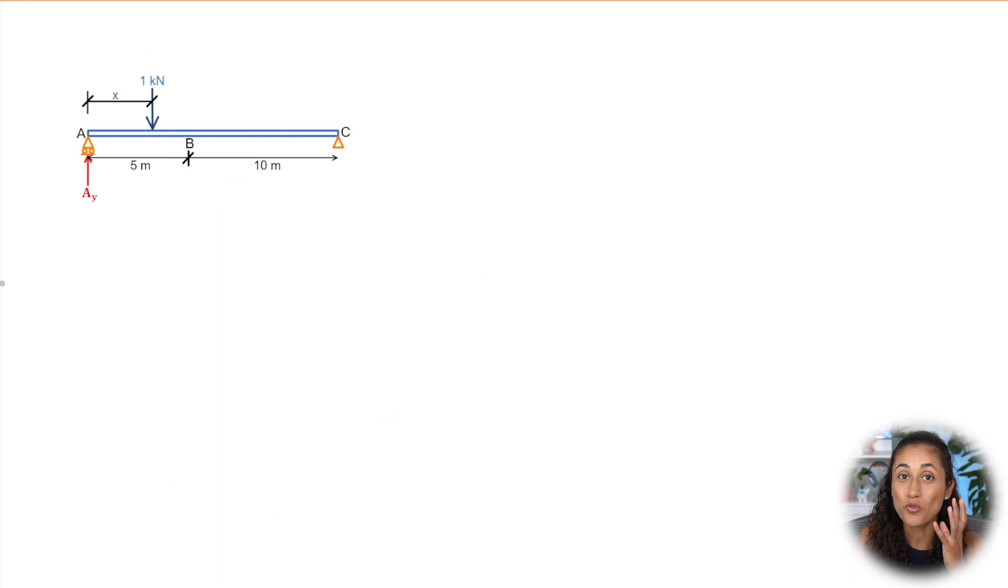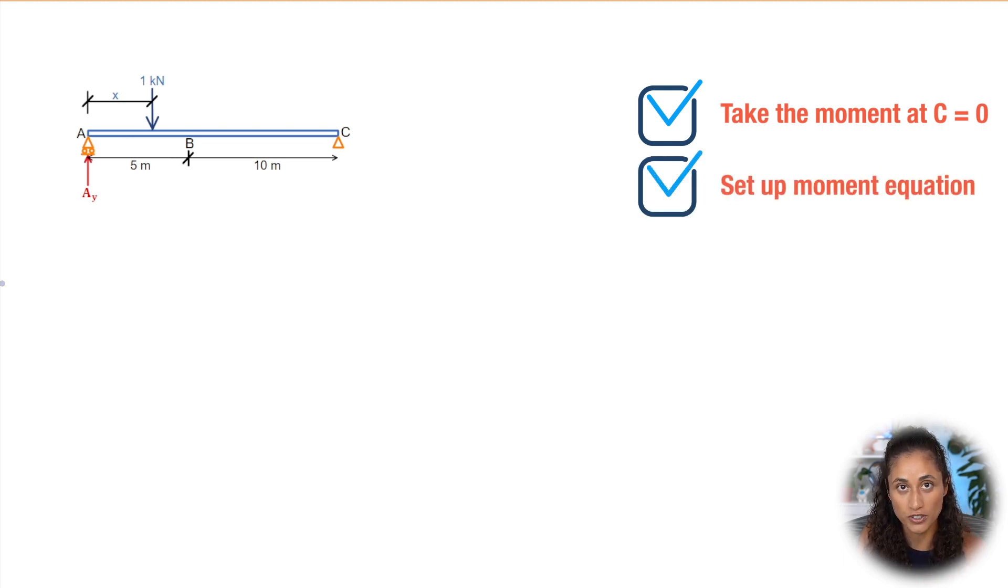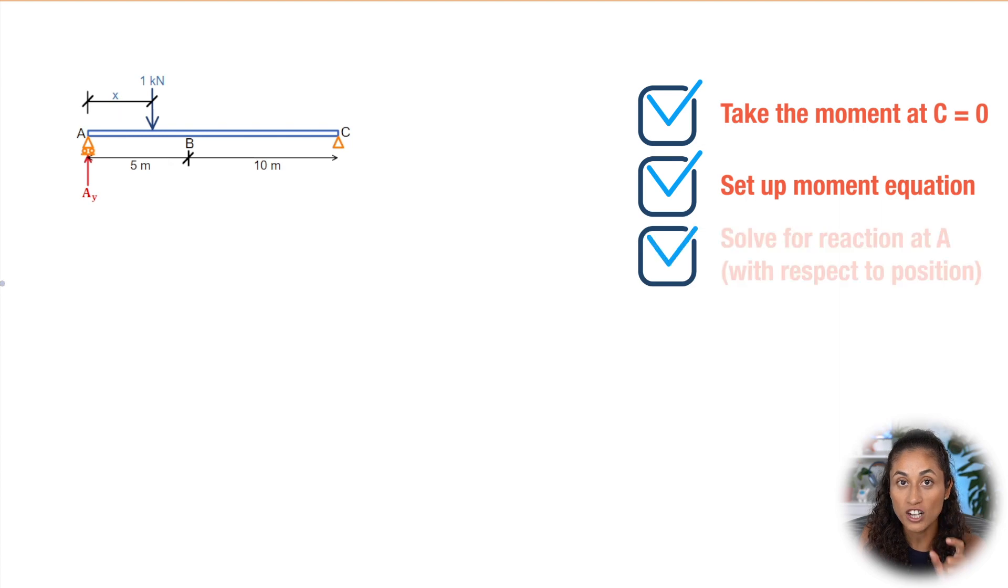Okay guys, so to find the influence line, the first thing we're gonna do here is take the moment at C and we're gonna equal it to zero and set up our moment equation. And then we're gonna solve for the reaction at A with respect to position.